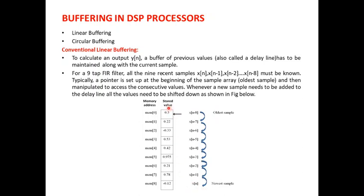All the values of these particular samples are stored in an array. Each value corresponds to a particular memory location, and in linear buffering the pointer is always set to the top or beginning of the sample array. Currently at the top of the array we have the oldest sample which is x of n minus 8, and all the particular samples are present. In the next consecutive operation, we need to fetch the next newest sample x of n.